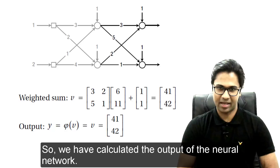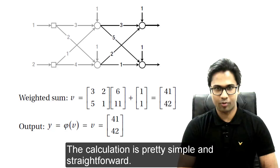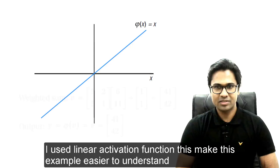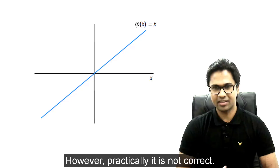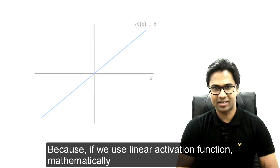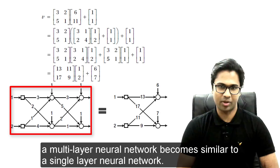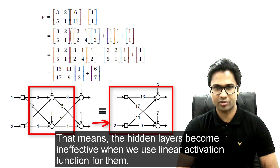So we have calculated the output of the neural network, and the calculation is simple and straightforward. However, using a linear activation function is not practical. Because mathematically, a multi-layer neural network with linear activation functions becomes equivalent to a single-layer neural network — meaning the hidden layers become ineffective when we use linear activation functions.